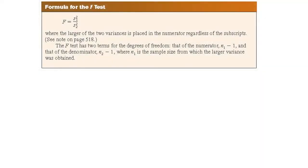The formula for the F-test is F equals the variance of one sample over the variance of the other sample, where the larger of the two variances is placed in the numerator regardless of subscript. Take note that your numerator should always be greater than the denominator. The F-test has two terms of degrees of freedom: that of the numerator, n sub 1 minus 1, and that of the denominator, n sub 2 minus 1, where n sub 1 is the sample size from which the larger variance was obtained. The F-test is used to compare the standard deviations of two variances.